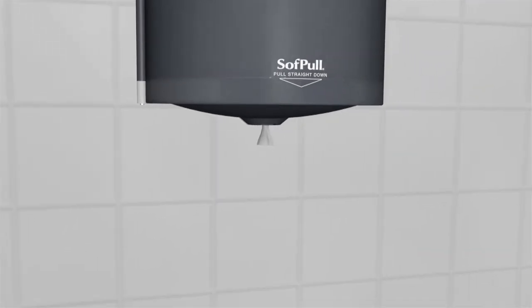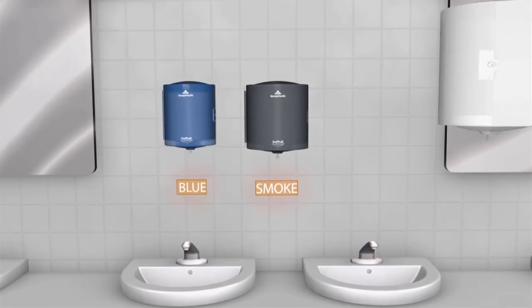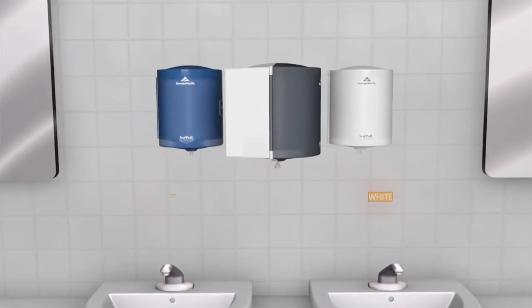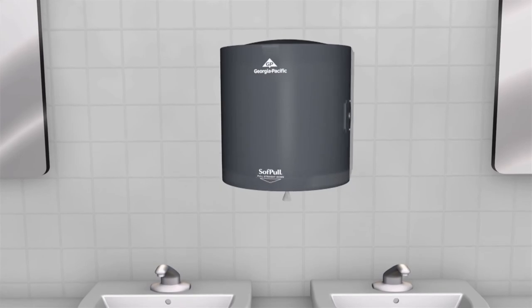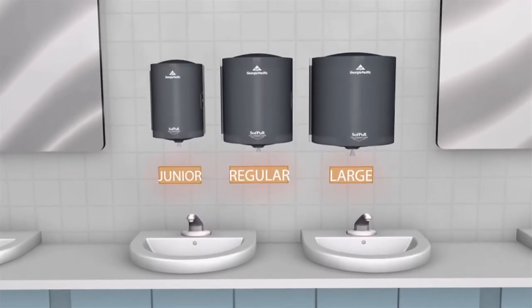When it comes to image, the soft pull dispenser is available in translucent smoke, splash blue and translucent white. It has a sleek roll design that enhances any decor and comes in three different sizes, large, regular and junior.